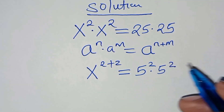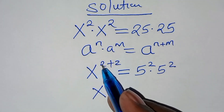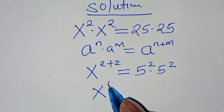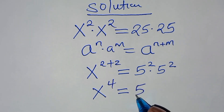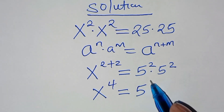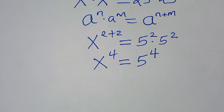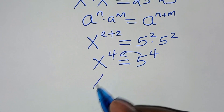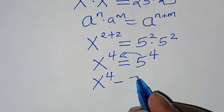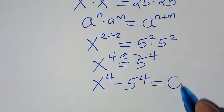Applying this exponent property, we have x to the power 2 plus 2, which is 4, equal to 5 to the power 2 plus 2, which is also 4. Now, let's take 5 to the power 4 to the left-hand side, so we have x to the power 4 minus 5 to the power 4, and this is equal to 0.